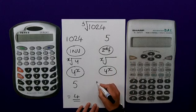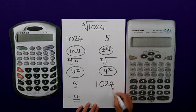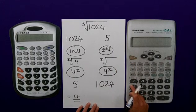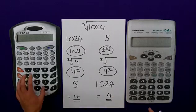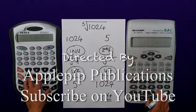I'd then type in my 1024. I'd press my equals and I'd get the same answer of 4 as I did on this calculator. I hope that helps.